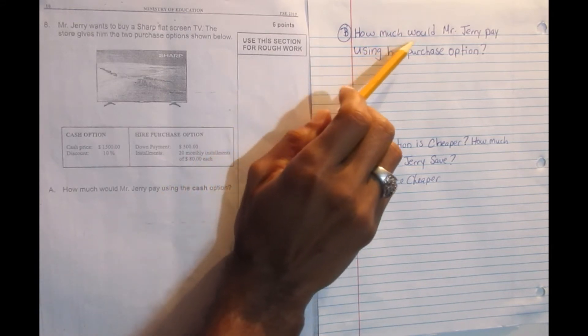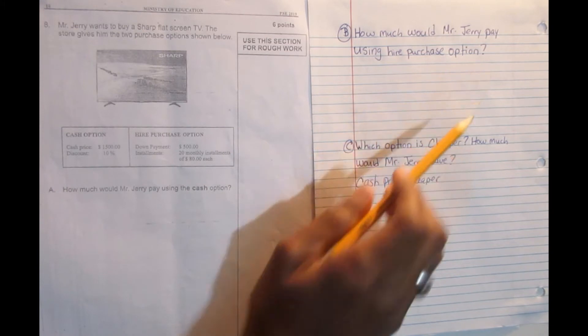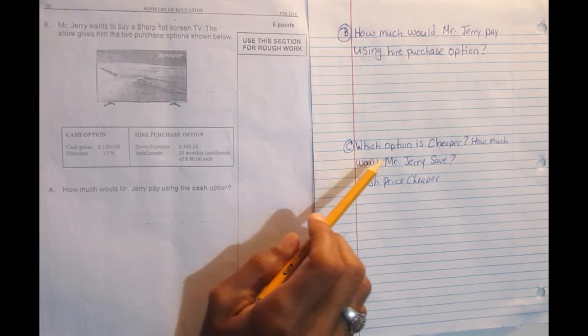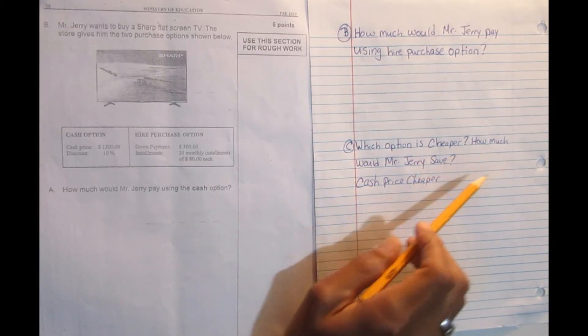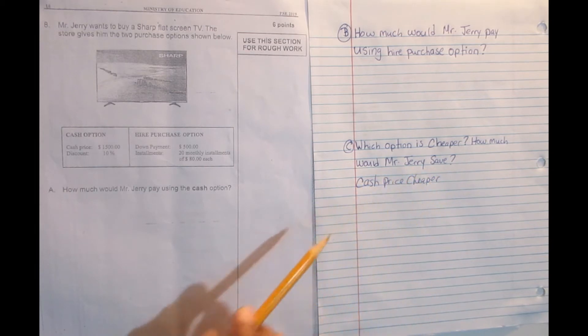B, how much would Mr. Jerry pay using hire purchase option? And C, which option is cheaper? How much would Mr. Jerry save? And we want to go straight into A.